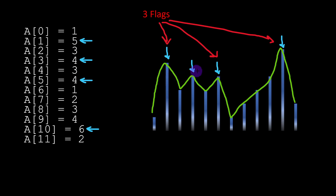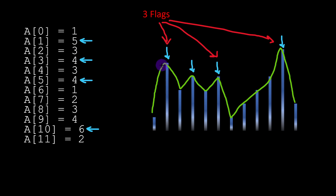If we decide to take three flags instead of two, we can position those on the first peak, then on the third peak, then on the fourth peak. The distance between the first two peaks is equal to 2, and our number of flags k is equal to 3. In order to respect the rule, we have to have flags separated by at least three positions. If we set the first flag on the first peak, we need to count at least three positions before we can put the second flag, and so on.